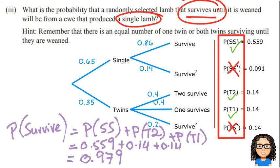What is the chance it'll be from a ewe that produced a single lamb? So from those combinations, the three green ticks, we want to look and see which one of those, or ones of those, meet this criteria of a single lamb. And that's going to be this first one here.